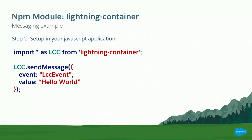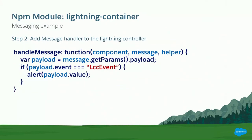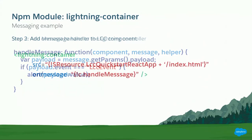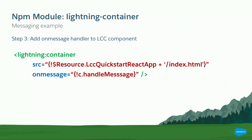On the other end, in your Lightning controller, you're going to create a handleMessage to take the message from LCC and quickly parse it as shown. The final step is in your lightning:container component — you want to add an onMessage and point to that message handler from the previous step. With those three simple steps, you're communicating from LCC into Lightning.